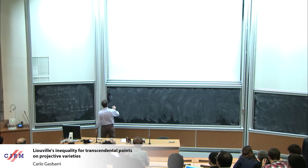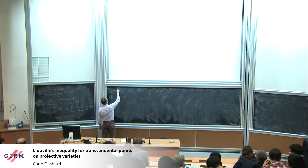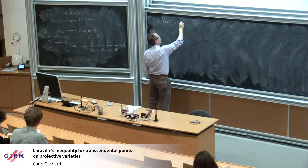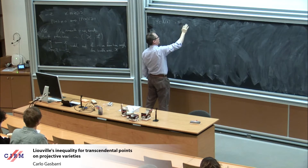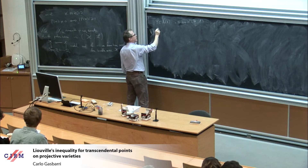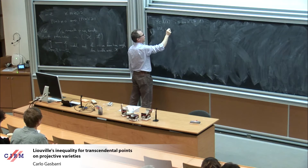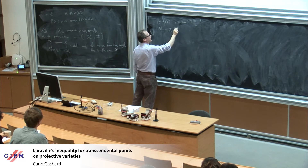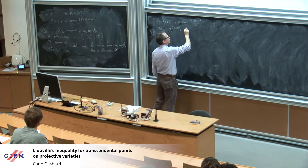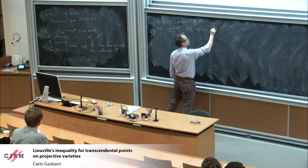I fix also some other notation. If Y is a subset of X(C) — and we will see after which kind of subset I am interested in — and S is a section in H⁰(X, L), I will denote by ‖S‖_Y the supremum for z in Y of the norm of S, and ‖S‖_Y⁺ the supremum between 1 and ‖S‖_Y.